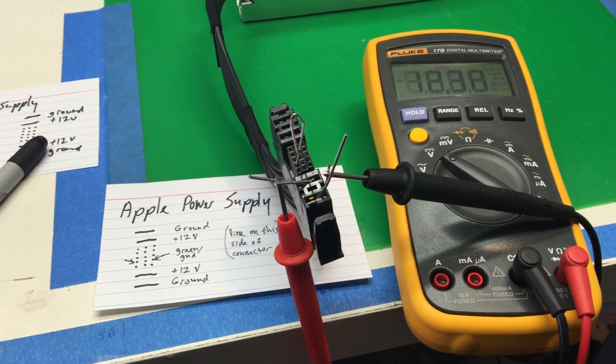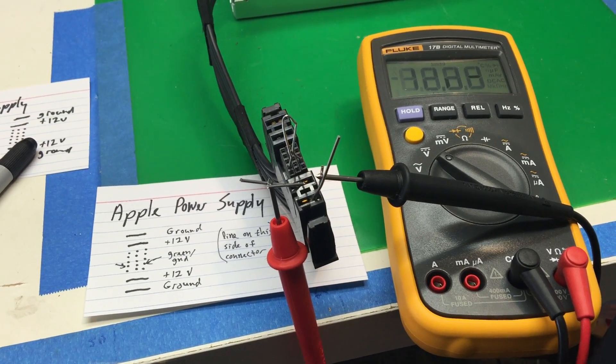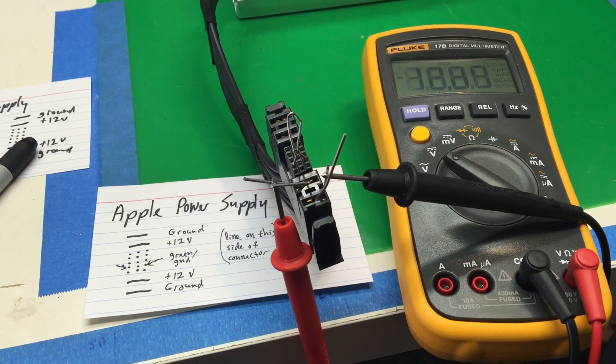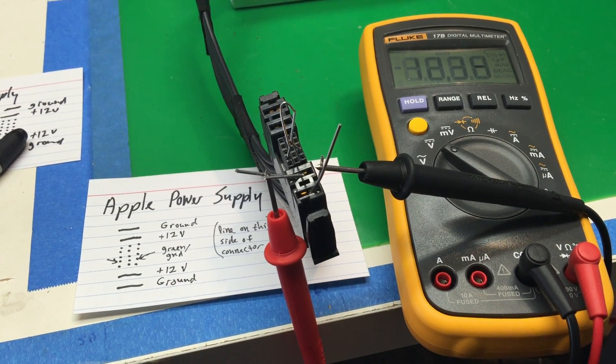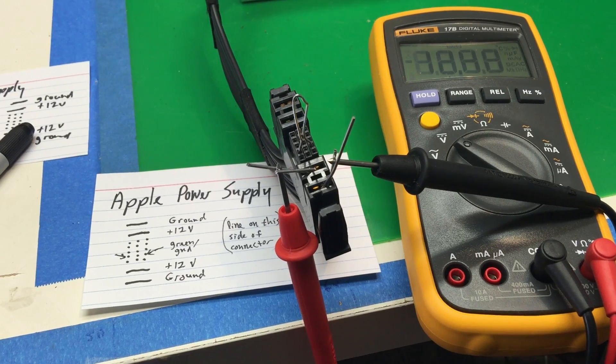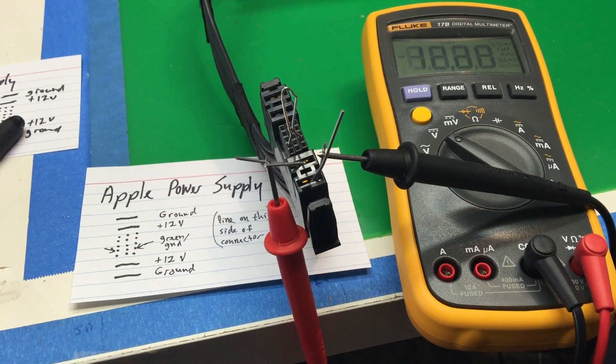Here's how I set up an Apple power supply for my battery charger. I was pretty interested in this because the power supply is pretty beefy—it's like 980 watts, I think 79 amps is what it's documented as.